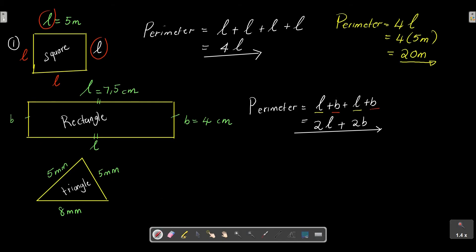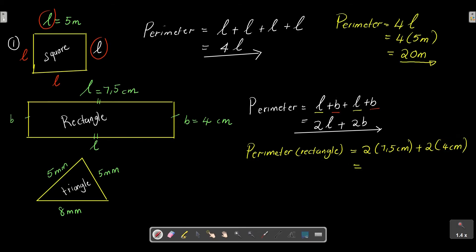Let's now calculate the perimeter of a rectangle with a length of 7.5 centimeters and a breadth of 4 centimeters. Perimeter = 2(7.5) + 2(4) = 15 + 8 = 23 centimeters. Note that it's not centimeters squared, because we are not multiplying length by breadth — it's just centimeters.